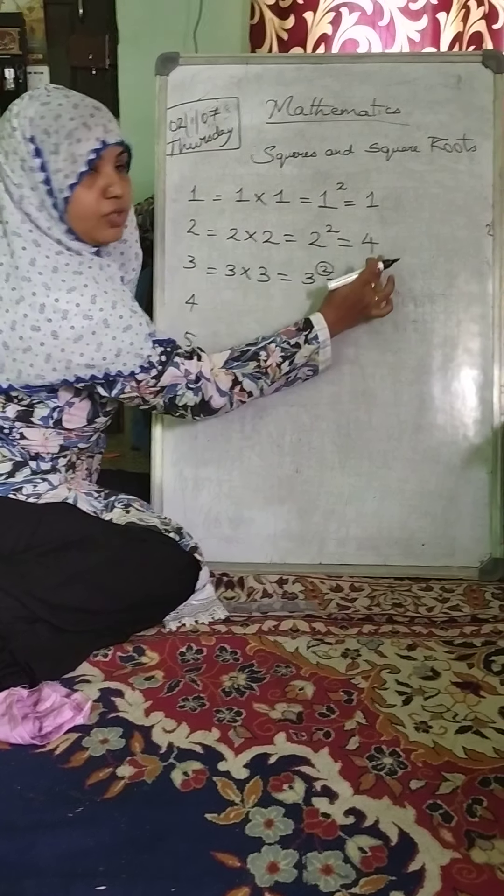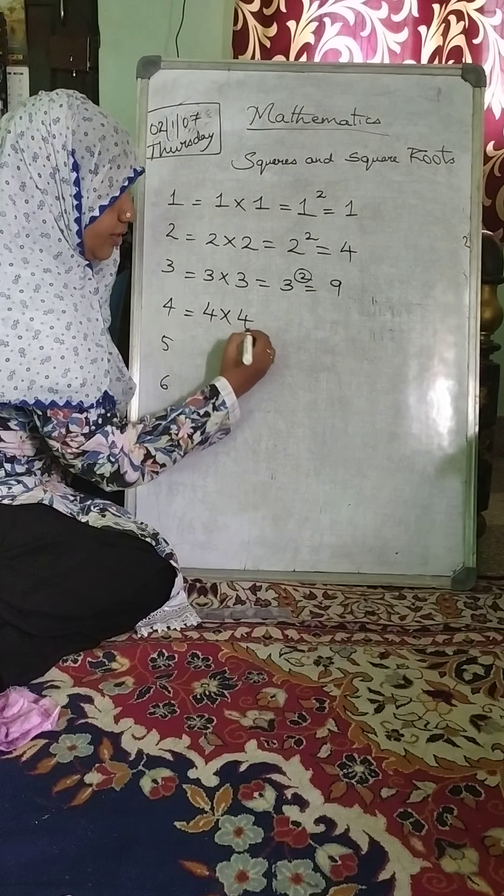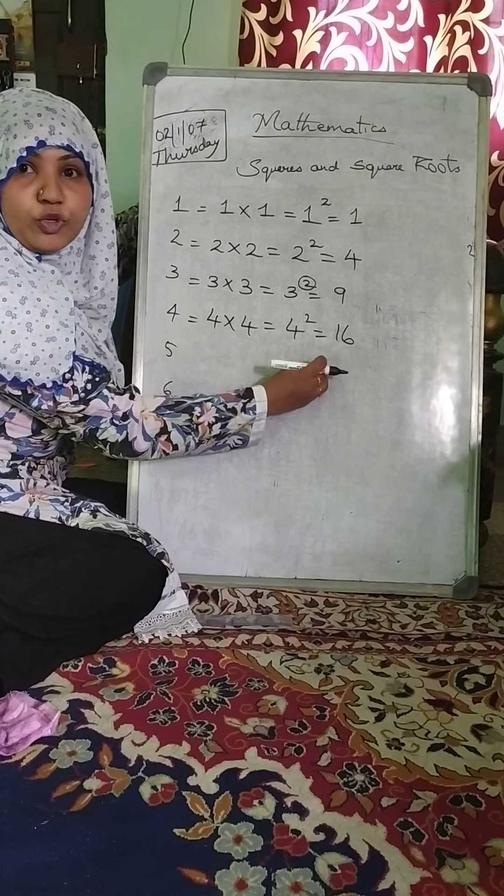2 square means 2×2=4. You will see here also, see 4×4, 4 square, 4×4=16. It is not 4×2=8, it is 4×4=16.